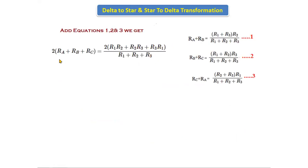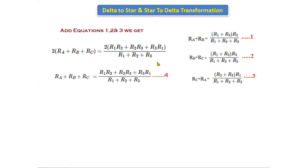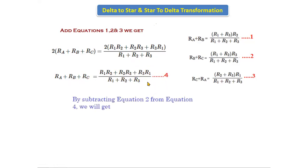Now add equations 1, 2, and 3 together. We get: 2·(Ra + Rb + Rc) = 2·(R1R2 + R2R3 + R3R1) / (R1 + R2 + R3). The factor of 2 cancels, giving us: Ra + Rb + Rc = (R1R2 + R2R3 + R3R1) / (R1 + R2 + R3). This is equation number 4.